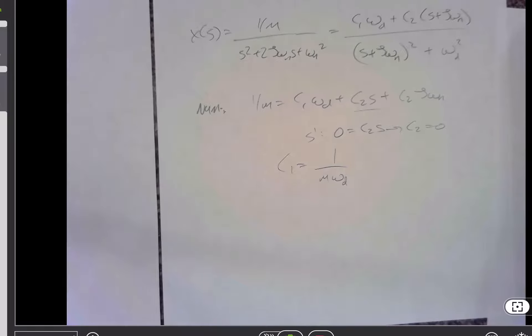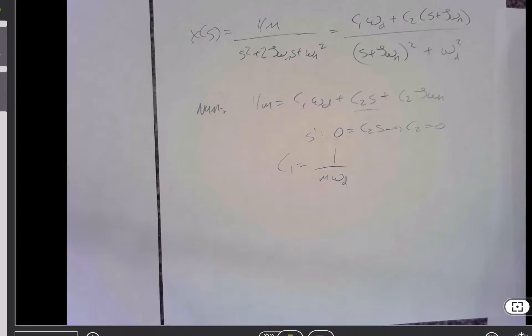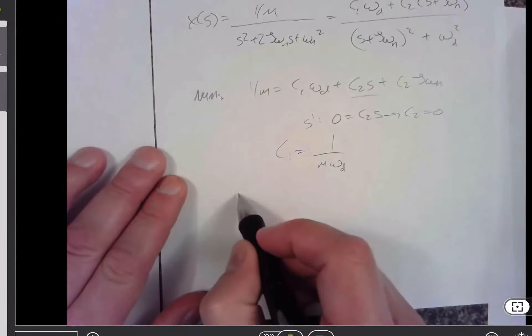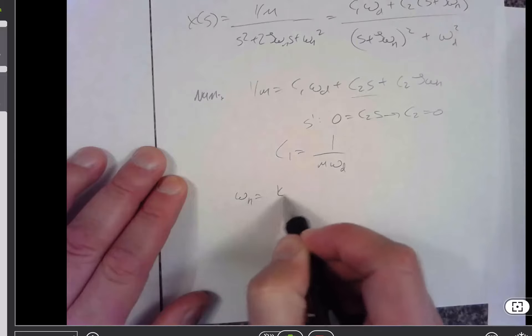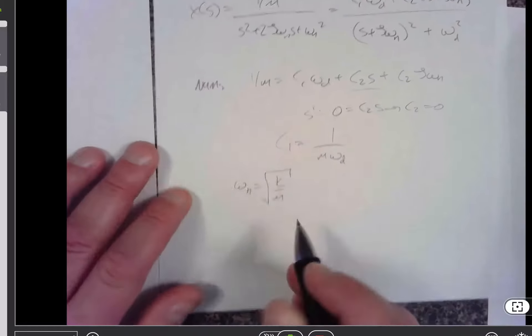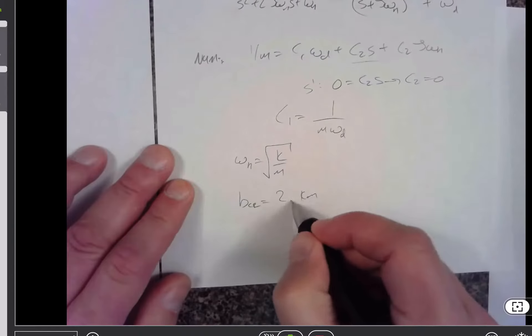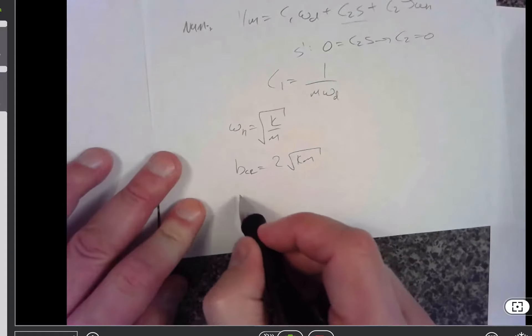So if I was trying to get all of that into a numeric form for a symbolic expression of the impulse response, I know that omega n is equal to k over m square root. I know that b critical is equal to 2 times the square root of k times m.